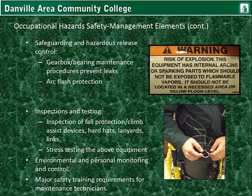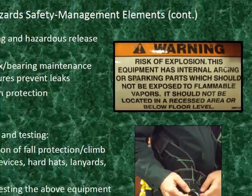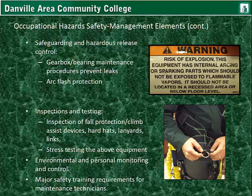Safeguarding and hazardous release control. Gearbox maintenance procedures help prevent leaks. Another part of hazardous release would not only be harmful fluids to the environment but also arc-flash protection — a basic warning such as 'Don't open this cabinet, this is high voltage.' Inspections and testing: inspection of fall protection or climb assist devices, hard hats, lanyards, and links needs to be performed. Stress testing the above equipment is sometimes necessary — putting it through a little bit of stress to ensure it's working, such as taking a clasp and pulling on it quickly with good force to make sure it latches correctly. Other elements include environmental and personal monitoring and control.